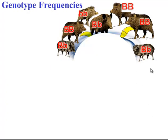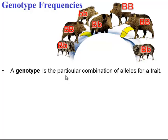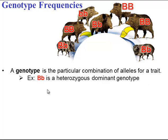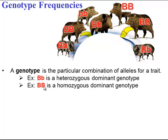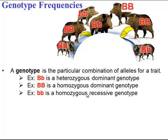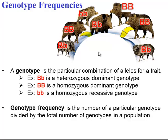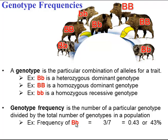We can also calculate genotype frequencies. Genotypes are combinations of alleles for a trait. Combining a dominant with a recessive gives a heterozygous genotype; two dominant alleles give a homozygous dominant genotype; and two recessive alleles give a homozygous recessive genotype. To calculate genotype frequency, count the number of a genotype divided by the total number of genotypes. For example, there are 3 heterozygous genotypes out of 7 total, giving us 43%.